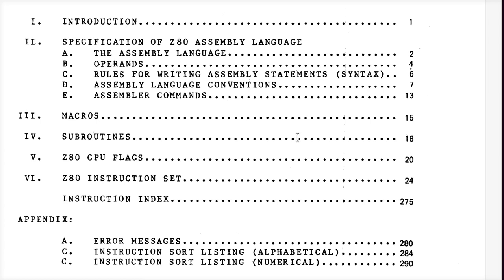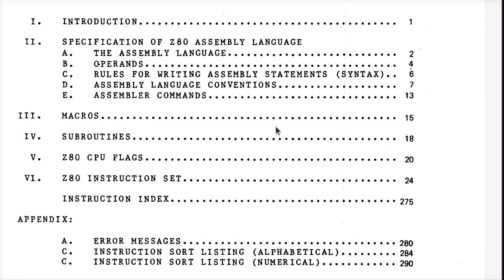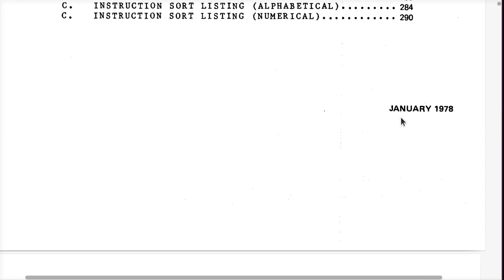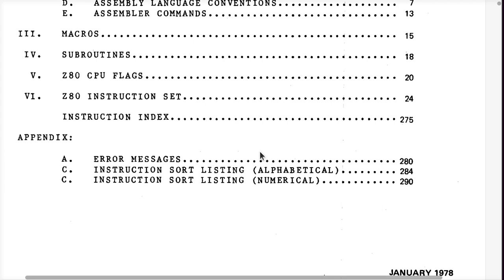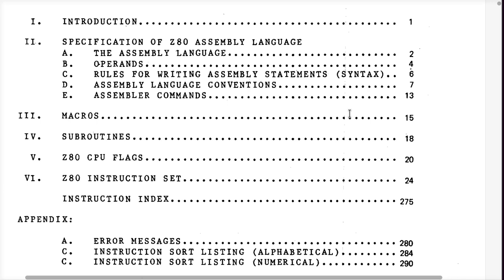When I first learned Z80 assembler, the manual I used was the TRS-80 Model 2 EDTASM manual from Microsoft, which consists of 10 pages of an introduction written by somebody at Microsoft, followed by an exact replica of this manual for 200 or 300 pages. 304 pages is what this PDF is — 290 plus the appendix. The instruction set starts on page 24 and ends with an index on page 275.